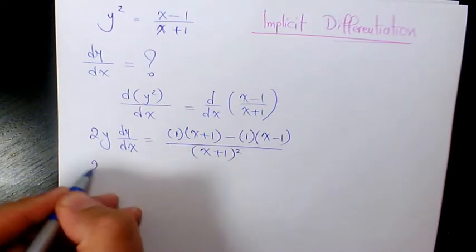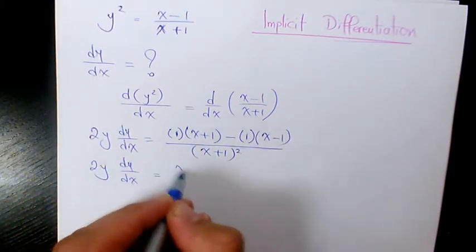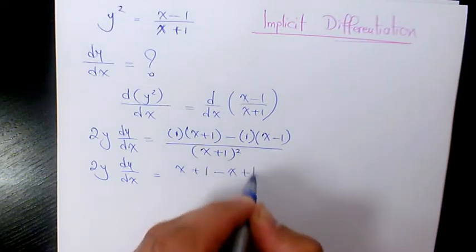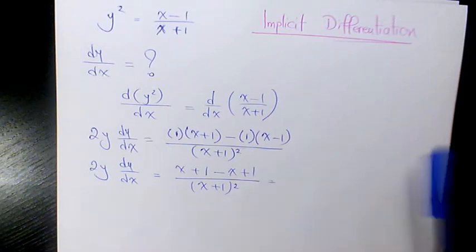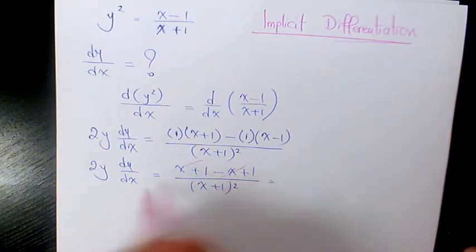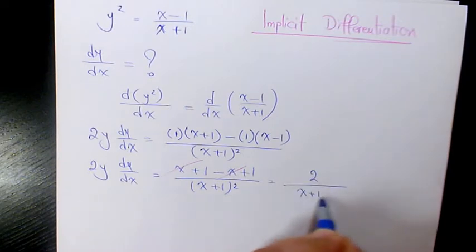Then we simplify to 2y dy over dx. In the numerator we have x plus 1 minus x minus 1 over x plus 1 squared. The x and negative x cancel out and we get 2 over x plus 1 squared.